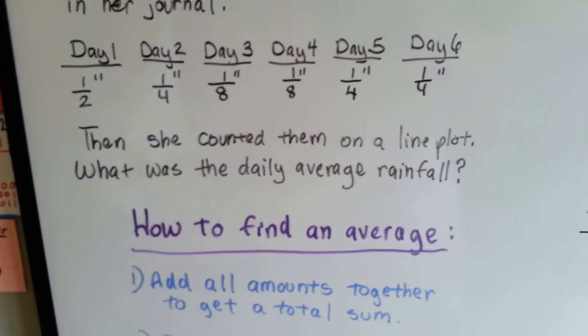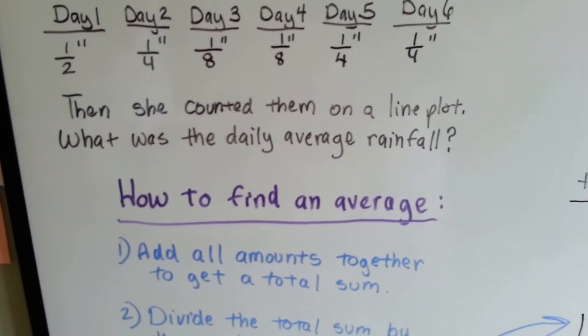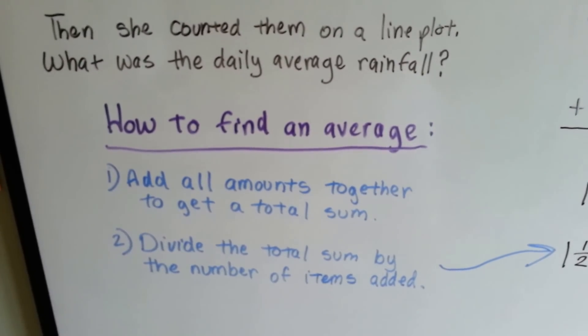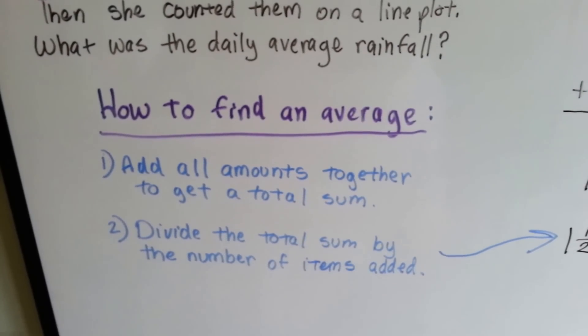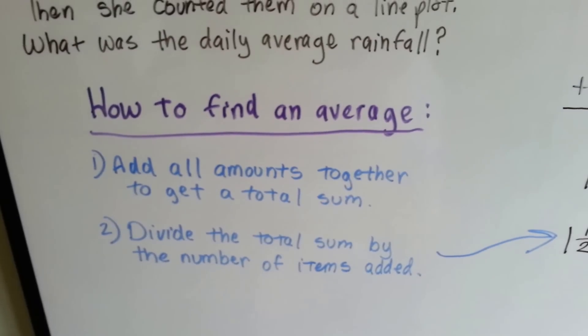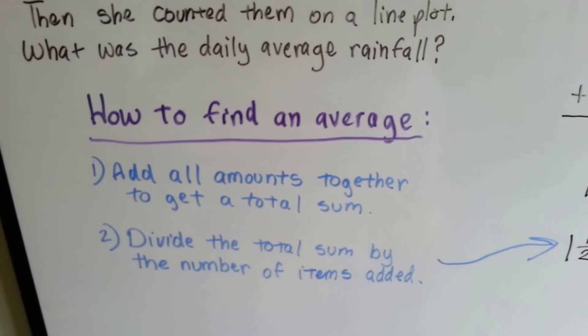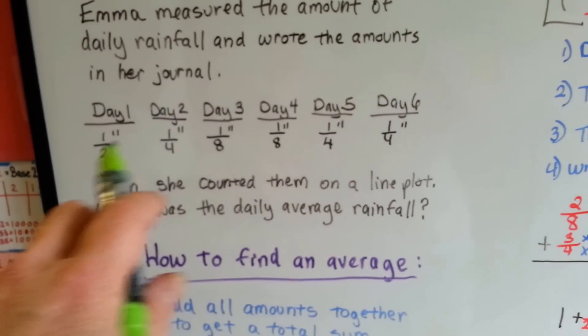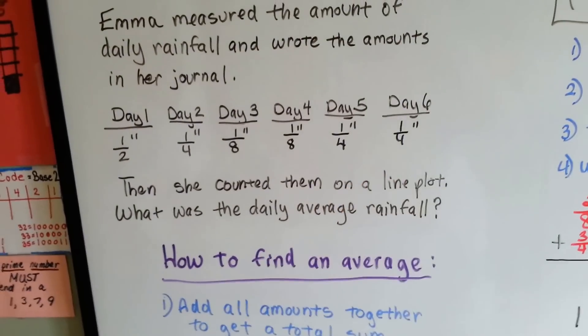She counted them on the line plot and now needs to find the daily average. So, we need to add all those fractions together to get a total sum. Then we need to divide that total sum by the number of things we added, the days of the rainfall. So, once we add all these fractions up, we need to divide it by six.